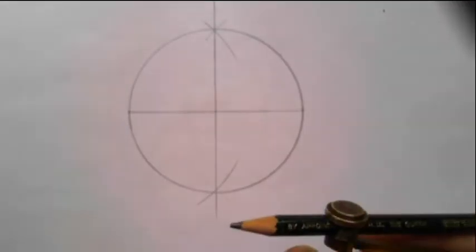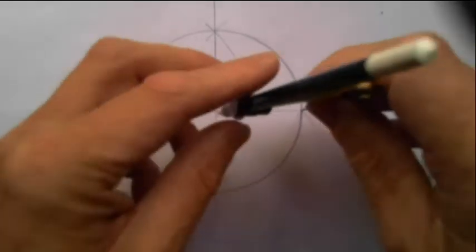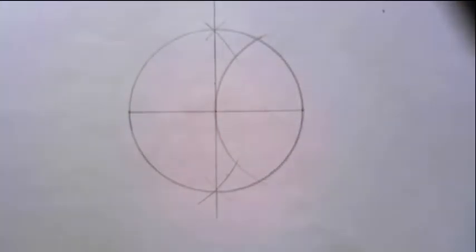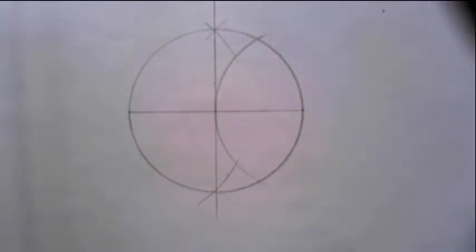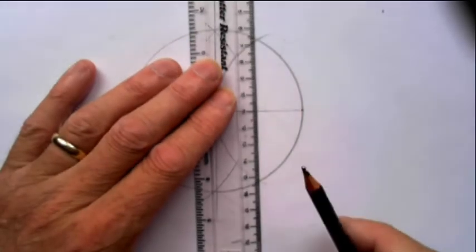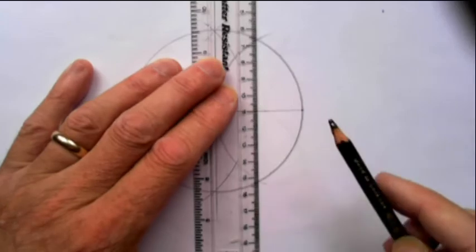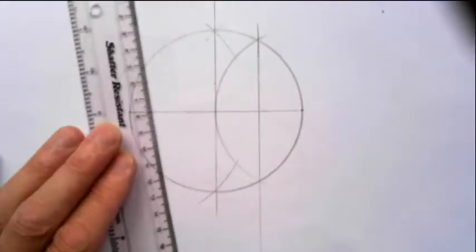Now, compass point there, draw another arc which will go through the sides of the circle. And then we join between those two points. Okay.